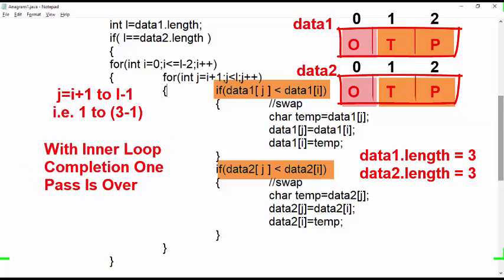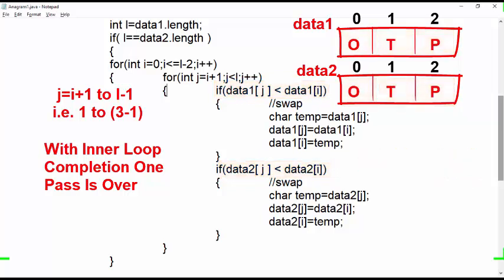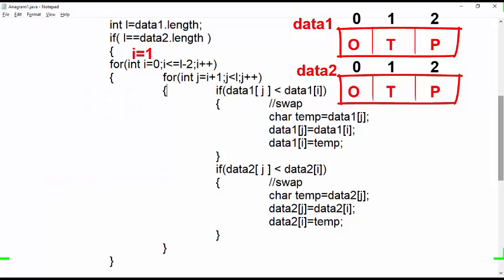Friends, kindly note that a single pass is when an individual element is being compared with subsequent elements. When inner loop ends, the pass is over and the value of i increments for the next pass. During the pass process, that is within inner loop, we compare data1[j] with data1[i] and data2[j] with data2[i]. Here, if any data1 or data2 of j value is smaller, then we interchange them.